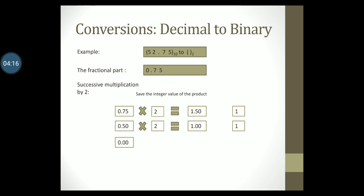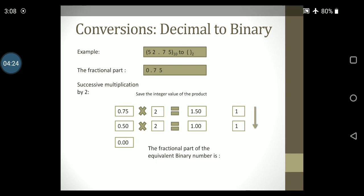We read the recorded numbers from top to bottom as 11. Therefore, the fractional part of the equivalent binary number is 0.11.